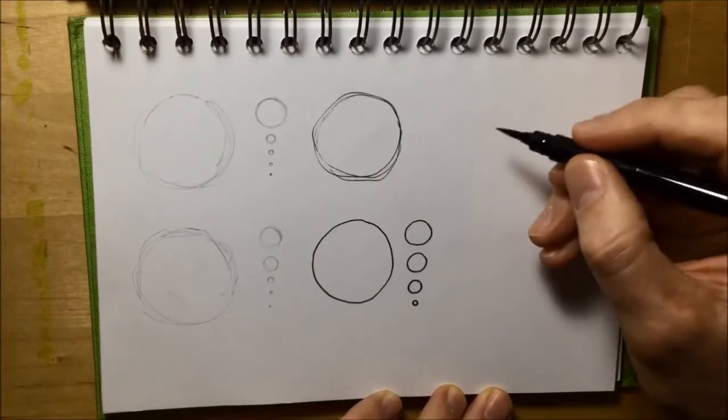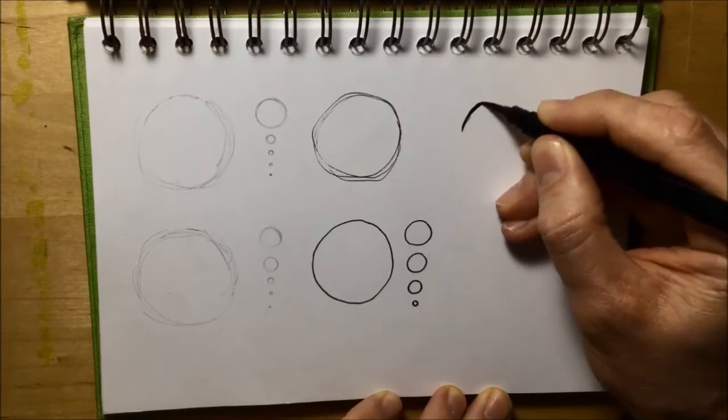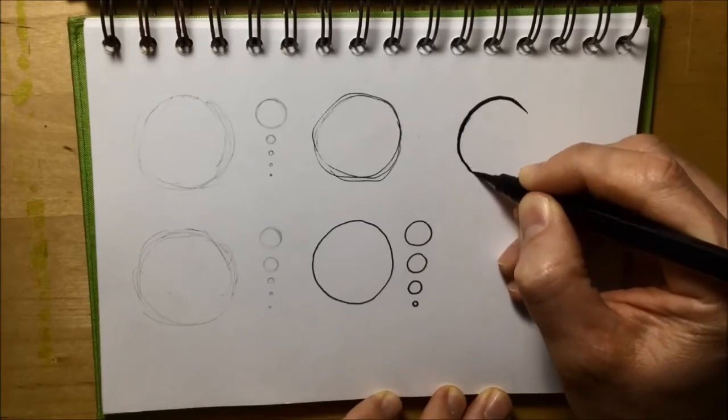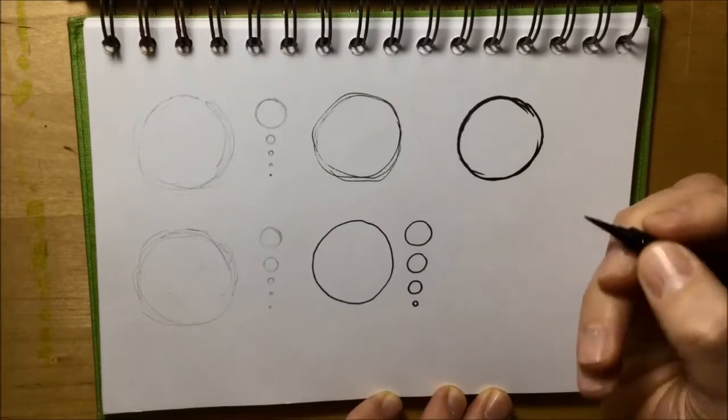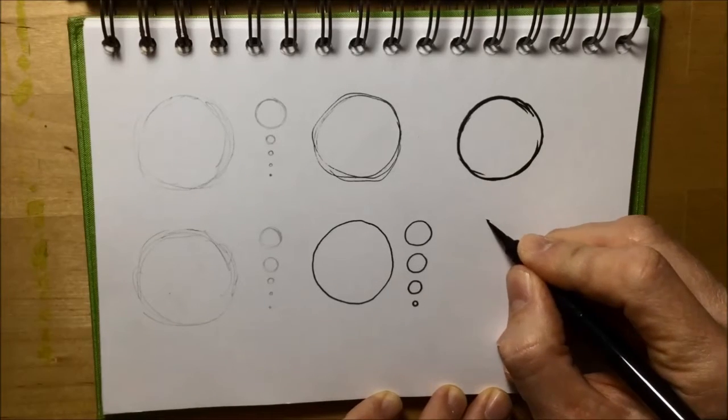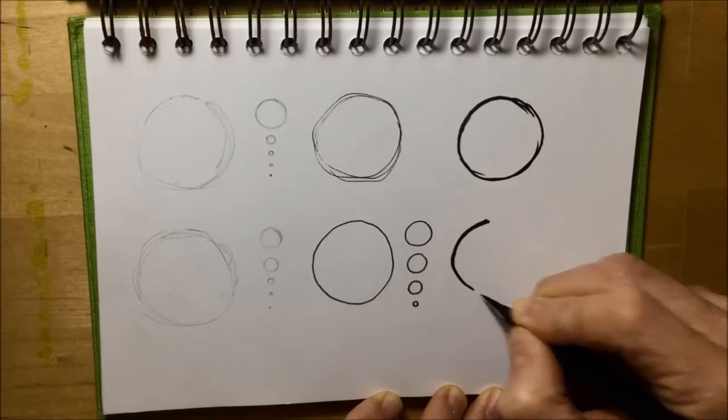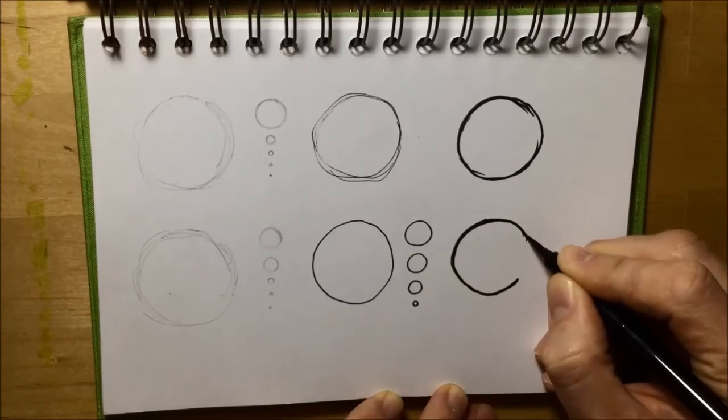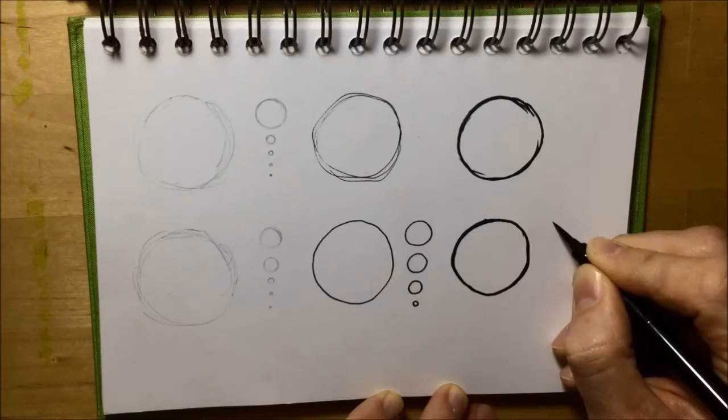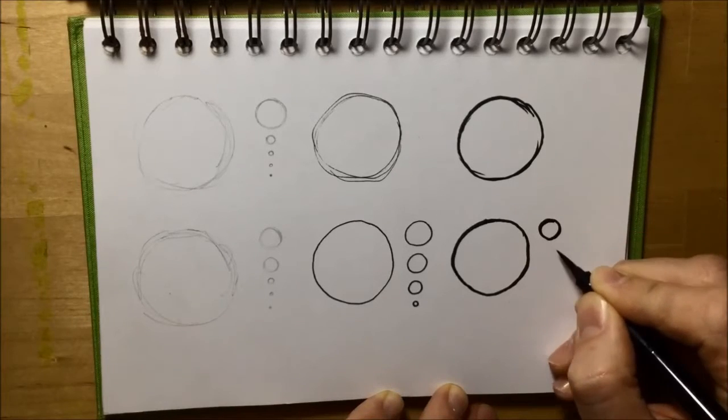When I'm using the brush pen, I hardly ever use that mid barrel grip that would give me very loose lines, quite a lack of control. It might be a good loose thing for me to try sometime, but when I'm holding the brush pen, I'm holding it quite close to the tip. I'm trying to get a roughly uniform line with these circles, but I'm always going for control with the brush pen.